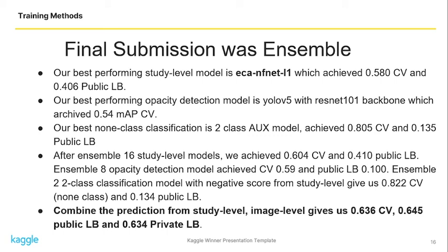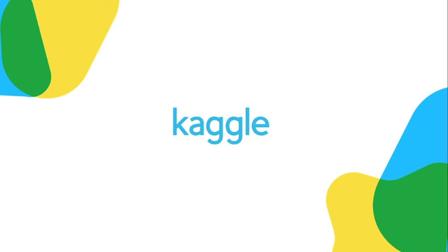After ensembling 16 study-level models we achieved 0.604 CV and 0.41 public leaderboard score. Ensembling 8 opacity detection models achieved 0.59 CV and 0.591 public leaderboard score. Ensembling 2 two-class classification models gave us 0.822 CV and 0.134 public leaderboard score. Combining predictions from study level and image level gave us 0.636 CV, 0.645 public leaderboard, and 0.634 private leaderboard. That's all about our solution — thanks for listening.